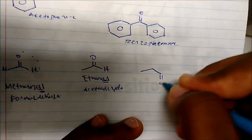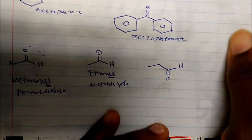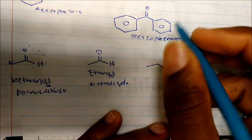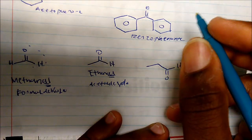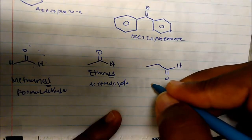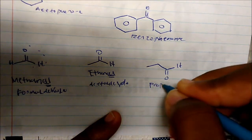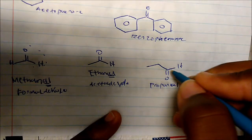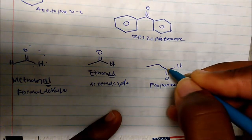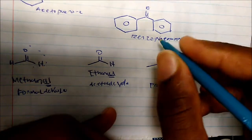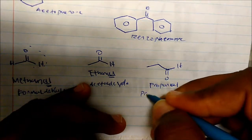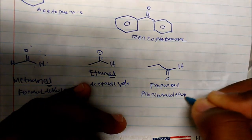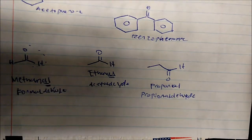What about this one? Counting: one, two, three — the longest chain gives us propan-, and we have no substituents. You always give the aldehyde carbon the lowest number, starting from carbon 1. So this is simply propanal. The common name is propionaldehyde, but the common name is not very important — what we should know is how to name these using the IUPAC system.